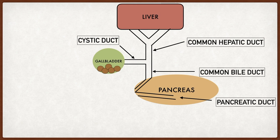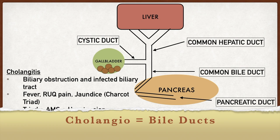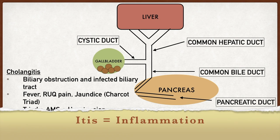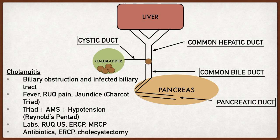The final gallbladder and biliary disease is cholangitis. Cholangio means bile ducts, and itis means inflammation — so cholangitis is inflammation of the bile ducts or biliary tree. It's usually caused by some kind of obstruction to the common bile duct, which could be from a gallstone, but also from pancreatic cancer, particularly if the mass involves the pancreatic head where the common bile duct runs, pushing on it and causing obstruction. So far cholangitis looks a lot like choledocholithiasis, with a stone obstructing the common bile duct.